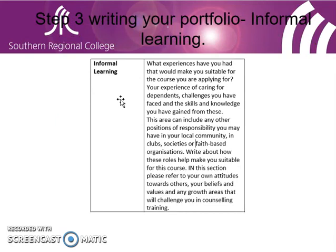The Informal Learning section asks what experience you've had that would make you suitable for the course. This may include experience of caring for dependents, challenges you've faced, and the skills and knowledge gained from these. It can also include positions of responsibility in your local community, clubs, societies, or faith-based organisations, and how these roles make you suitable for the course. Importantly, write about your own attitudes towards others, your belief systems and values and what has influenced them, any growth areas that would challenge you in counselling training, and areas you want to develop about yourself.